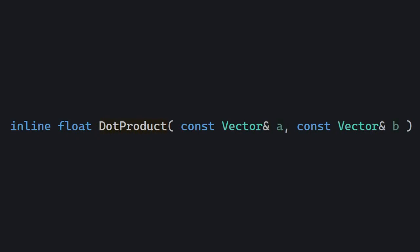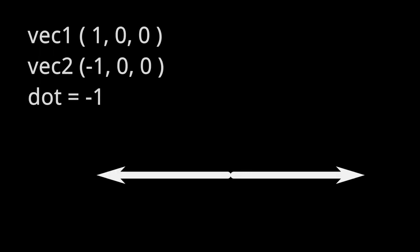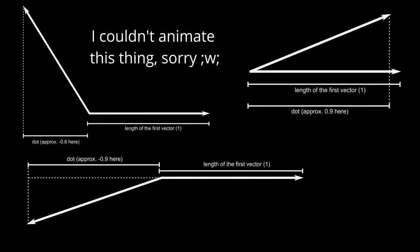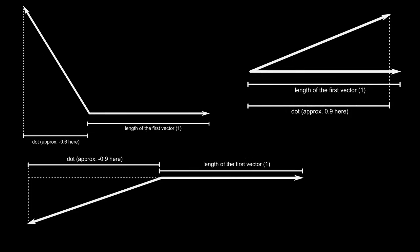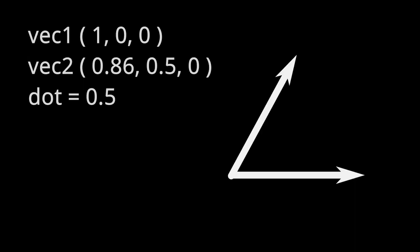Before we move on to Half-Life specific stuff, I want to mention the dot product. We'll be talking exclusively in the context of unit vectors. The dot product is a function that takes two vectors and returns a number indicating how similar those two vectors are: 1 if they're the same, 0 if they're completely different, and negative 1 if they're facing opposite directions. In other words, a dot product is the projection or shadow of one vector onto another. One use is comparing angles between vectors — if two vectors are 90 degrees apart, the dot product is 0; if they're 60 degrees apart, it's 0.5.